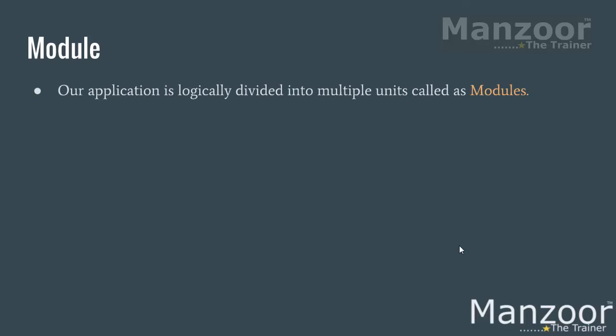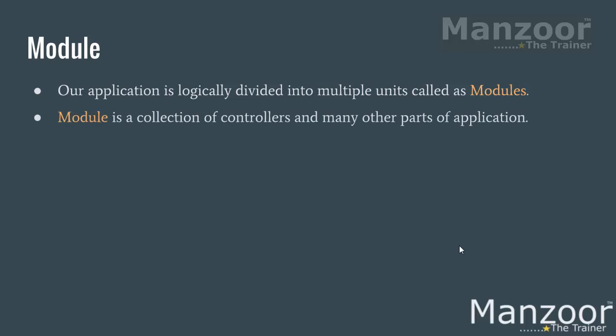Our application is logically divided into multiple units called modules. A module is a collection of controllers and many other parts of the application. Just like a namespace is a collection of classes, a module is a namespace — a collection of controllers, directives, filters, and many more things.